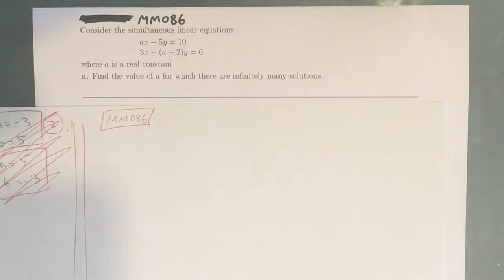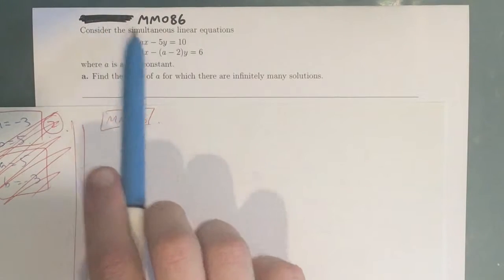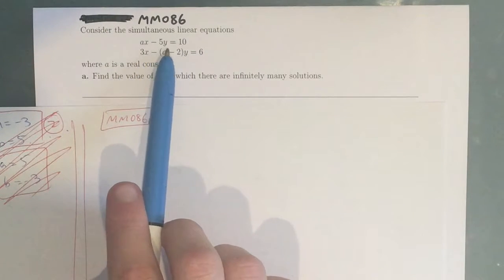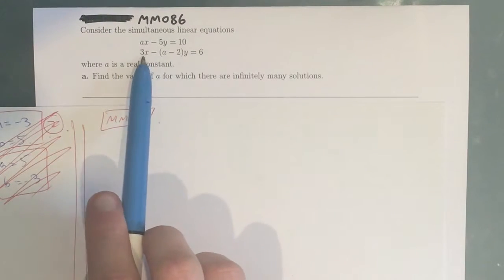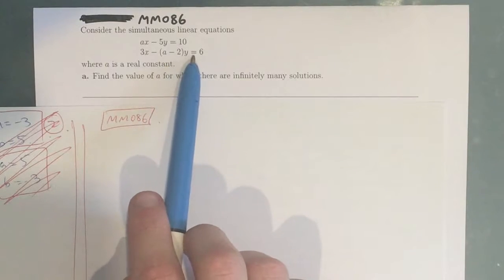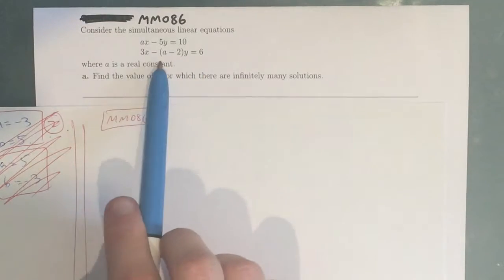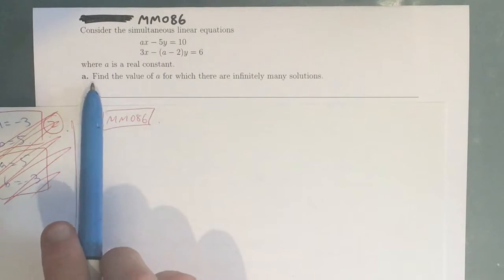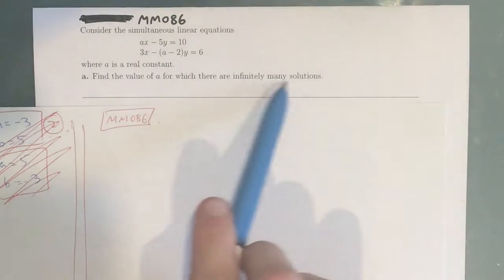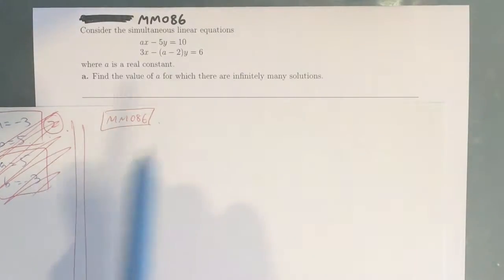Hey guys, this is question MM086 from the Maths Methods Sharpened Study Guide. Consider the simultaneous linear equations AX minus 5Y equals 10, and 3X minus (A minus 2)Y equals 6, where A is a real constant. Find the value of A for which there are infinitely many solutions.